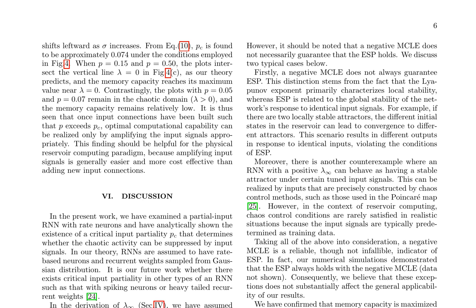The authors discuss the implications of their findings on the design of reservoir computing systems, emphasizing that a negative maximum conditional Lyapunov exponent, MCLE, is a reliable indicator of the echo state property, ESP. They suggest constructing a partial input RNN at the edge of chaos by tuning the magnitude of input signals, as long as the input partiality exceeds the critical value p_c. This approach could provide a novel method for designing reservoir computing systems.